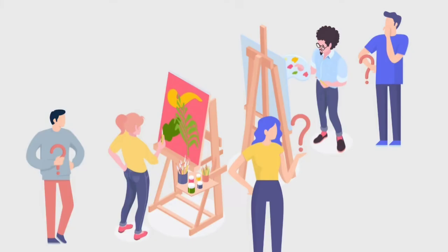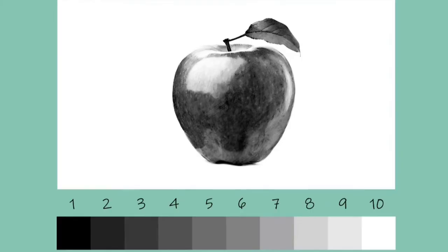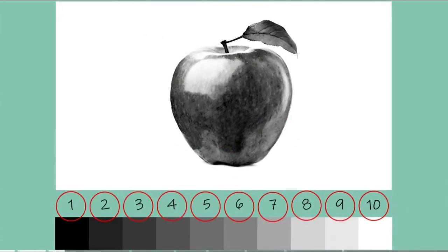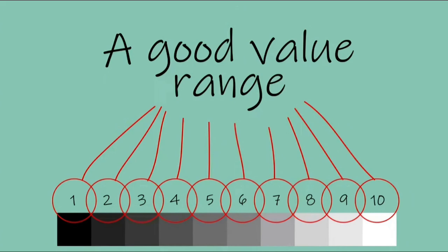Most of you have seen a value scale before, but do you actually know how to use it in your art? Do you actually know how to apply it to various artworks? Generally speaking, when we are creating an artwork, we'd like to depict a wide range of value. When an artwork depicts the entire value scale from 1 to 10, it's called having a good value range.